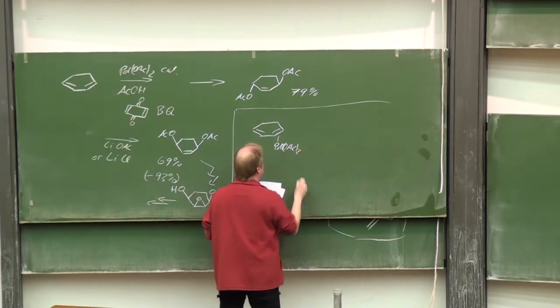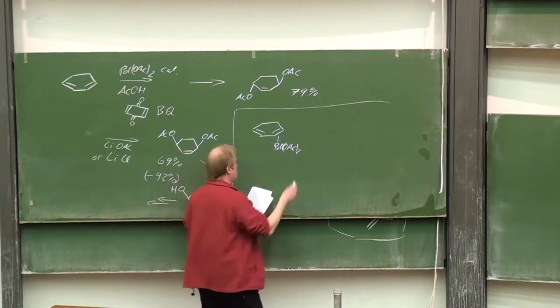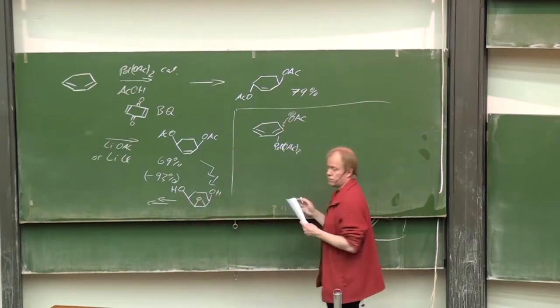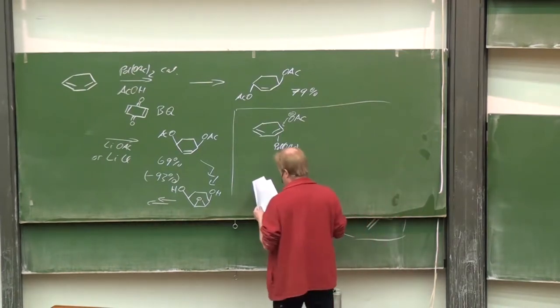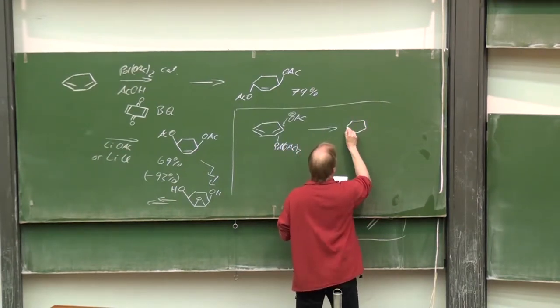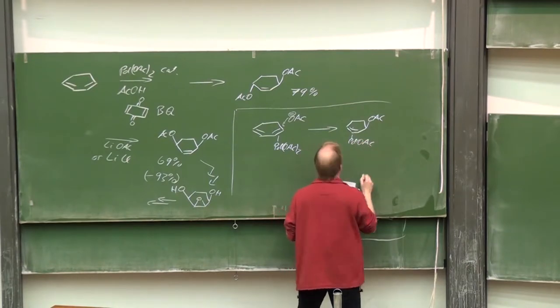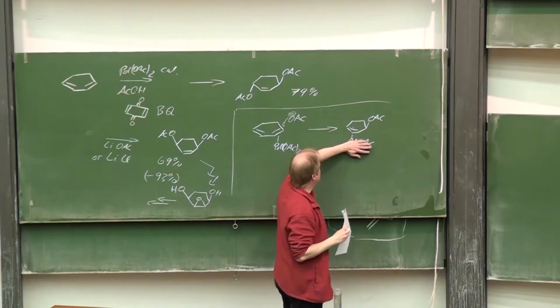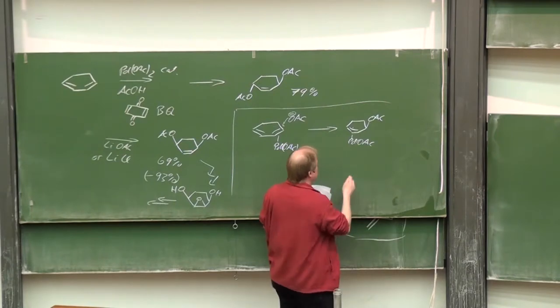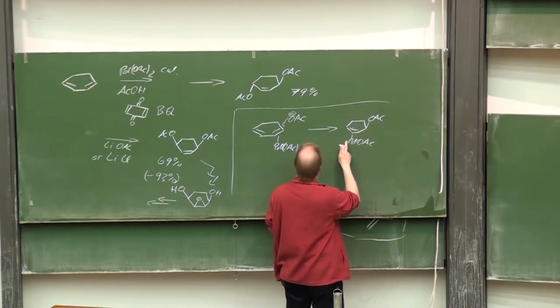Now to the mechanism. The diene coordinates to the palladium acetate, it's therefore activated for the attack of a nucleophile, and acetate for instance from acetic acid which is present, and we will then form the allyl palladium complex with the palladium acetate on the other side of the ring.